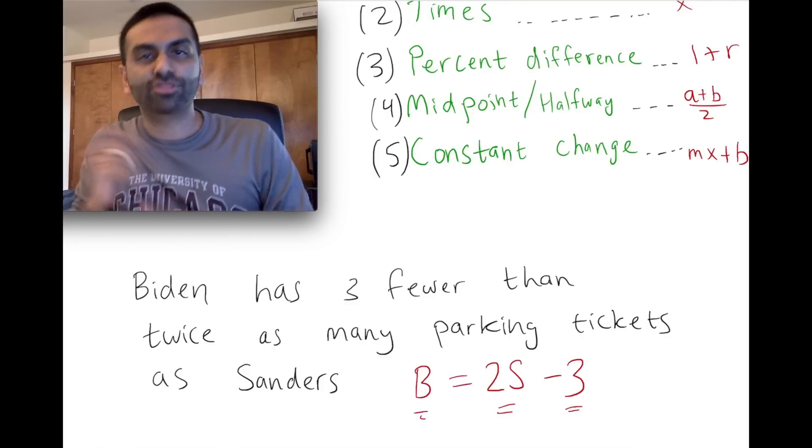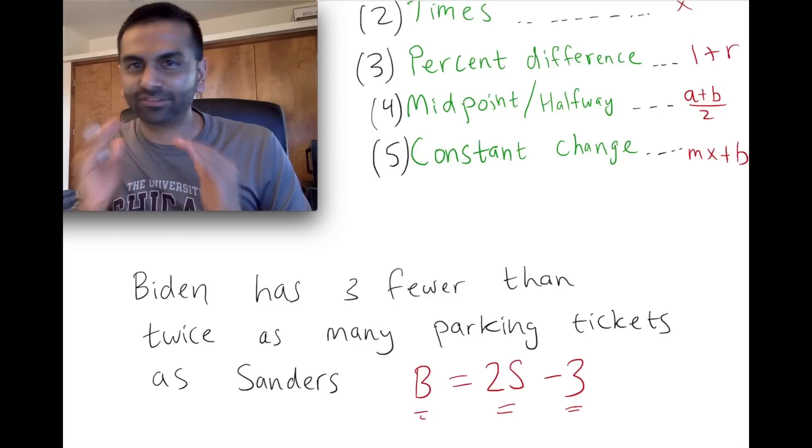minus three. Three fewer than twice as many. So again, that's just the way to start translating between English and math.